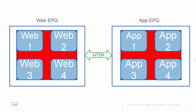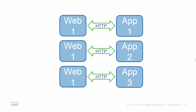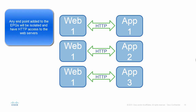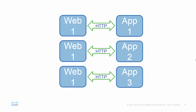But what we do have is the ability for web one to have HTTP access to app one, app two, app three, and so on across all of the VMs within our EPGs. We don't necessarily need all of our web servers to communicate with each other, and we don't necessarily need all of our app servers to communicate with each other.